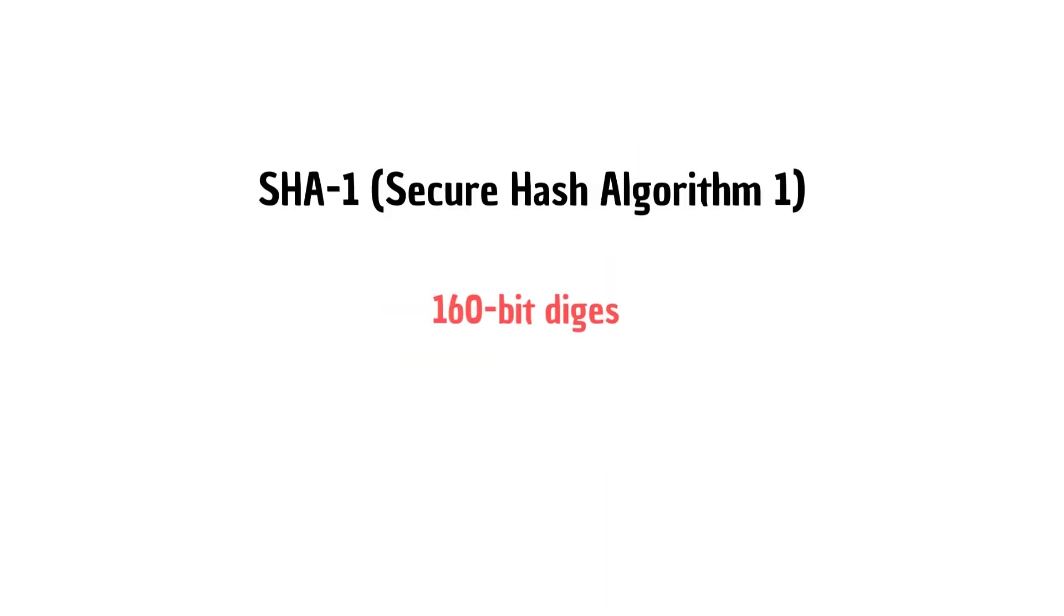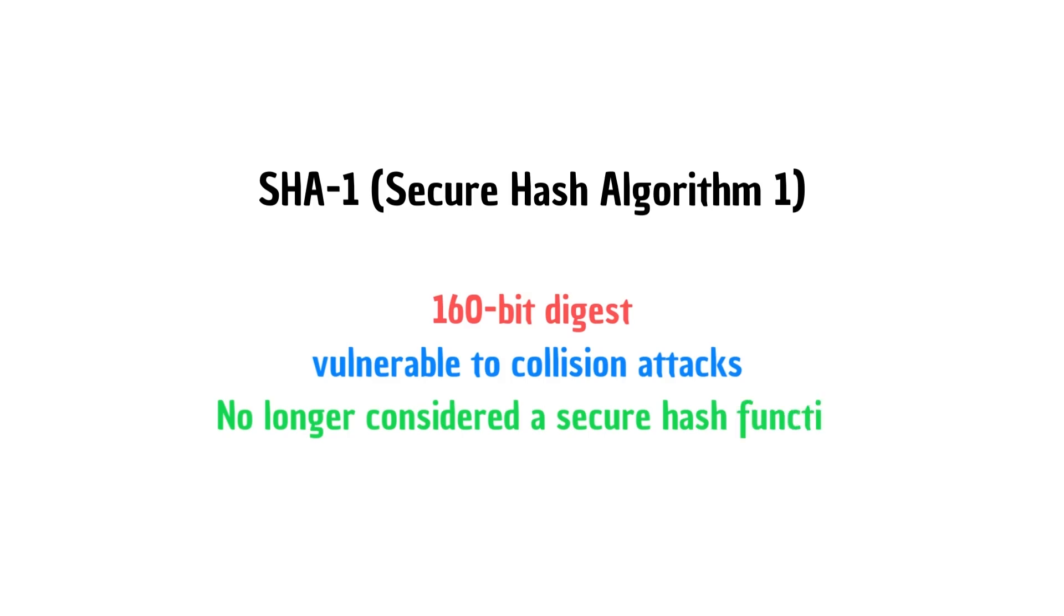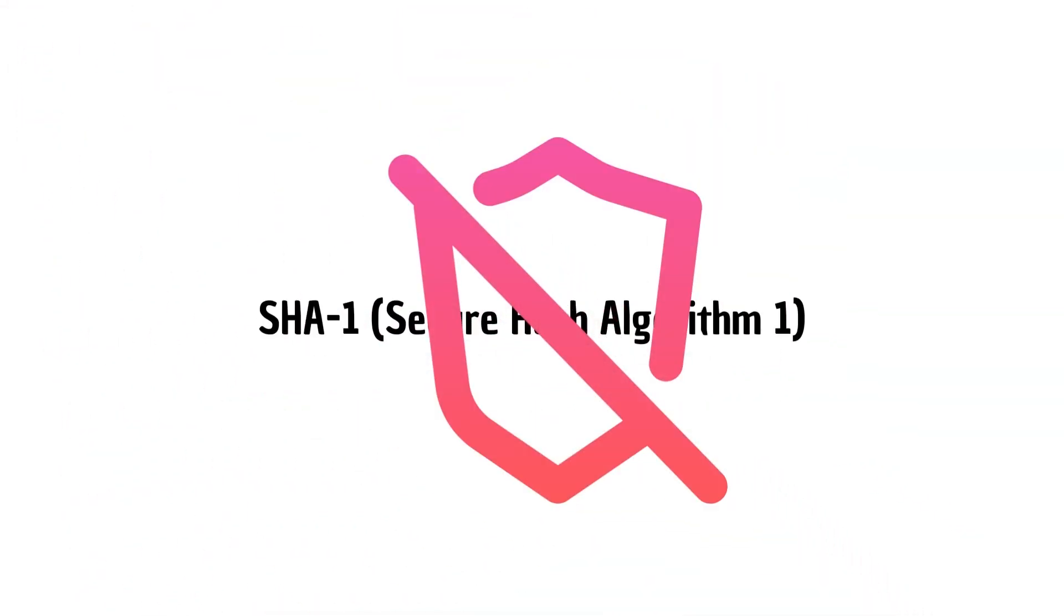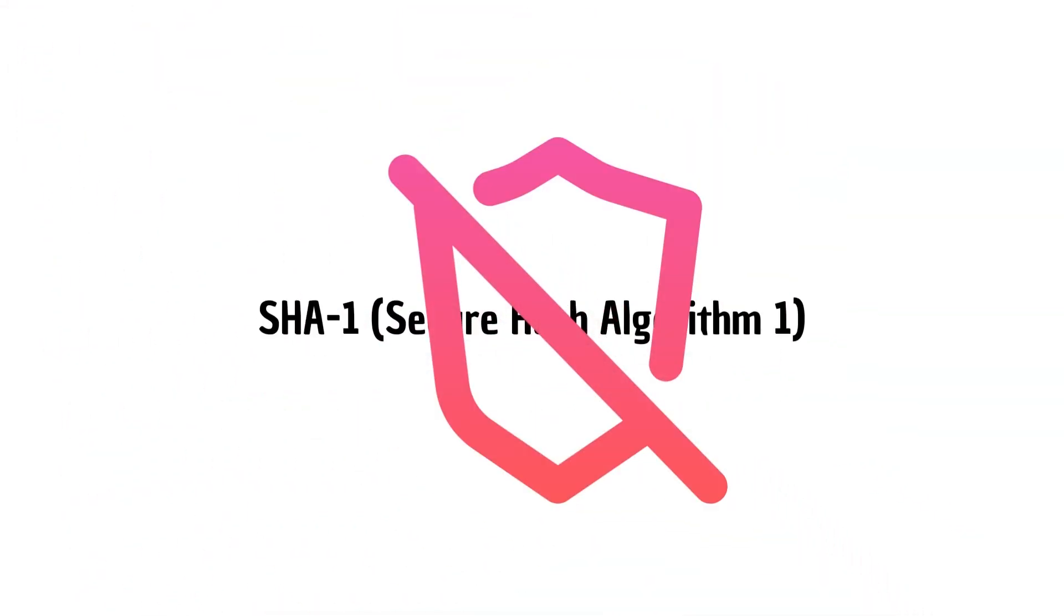SHA-1 is a widely used hash function that produces a 160-bit digest. Like MD5, SHA-1 is also considered vulnerable to collision attacks and is no longer considered a secure hash function.